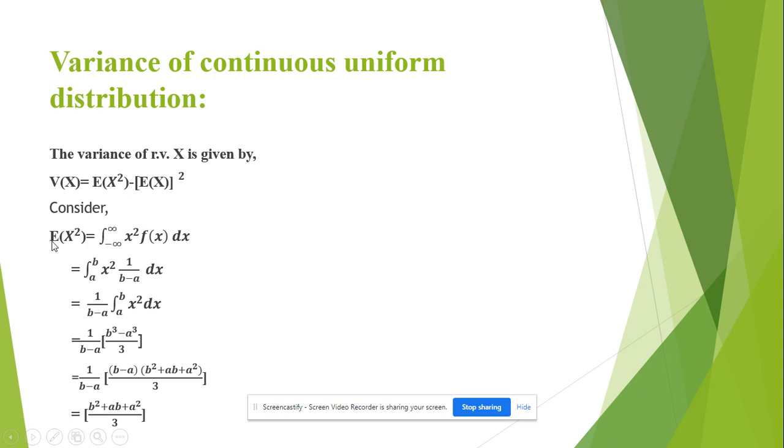So consider expectation X square. By definition it is integration minus infinity to plus infinity x² f(x) dx where f(x) is the pdf. Put the value of pdf as 1 by b minus a and since 1 by b minus a is a constant, take it outside the integration. And integrate x² dx.